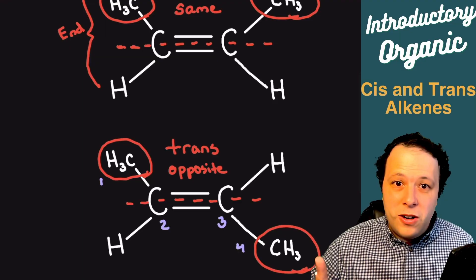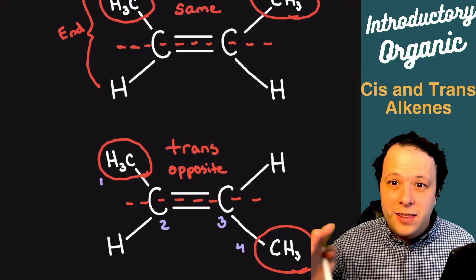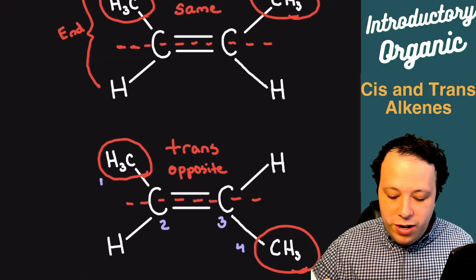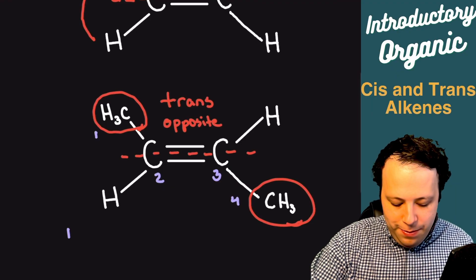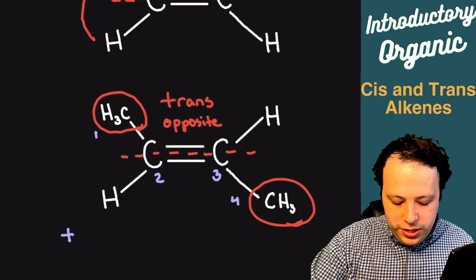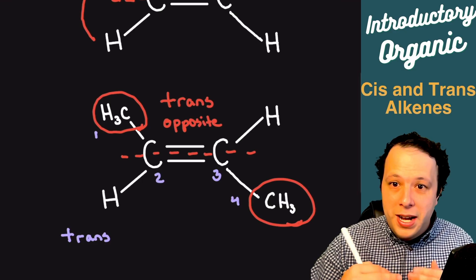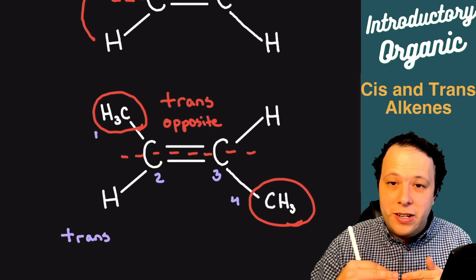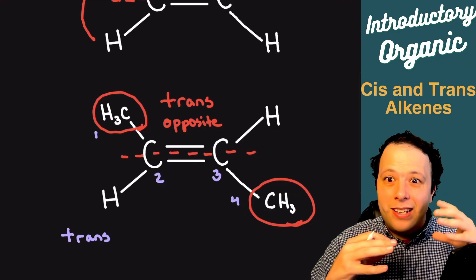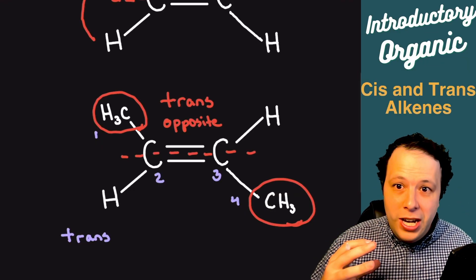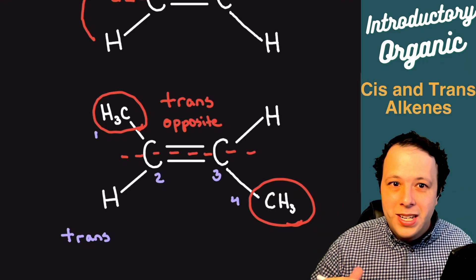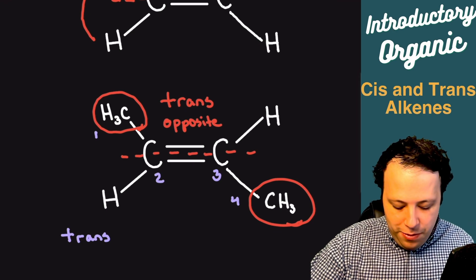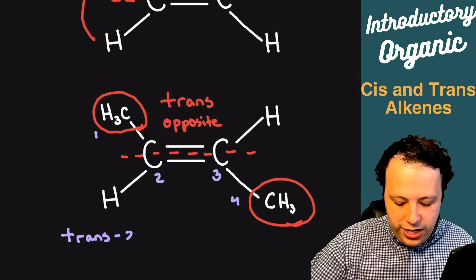For example, I have four carbons along my longest chain here. The way you would name this one is you would say trans to tell you about the isomer — that tells you about the three-dimensional shape around this molecule — and the way we would number this, we'd say trans-2-butene.